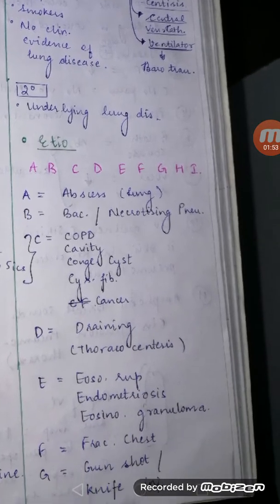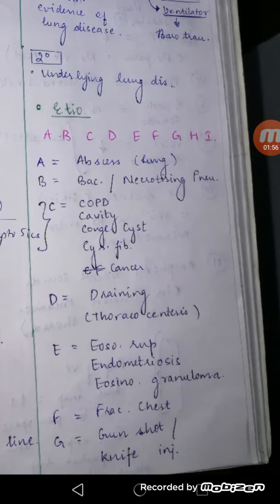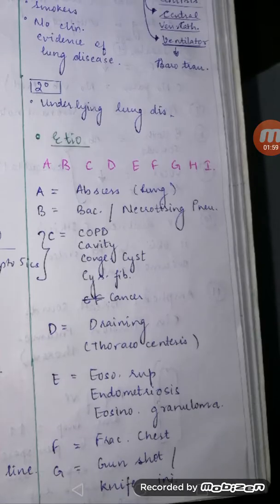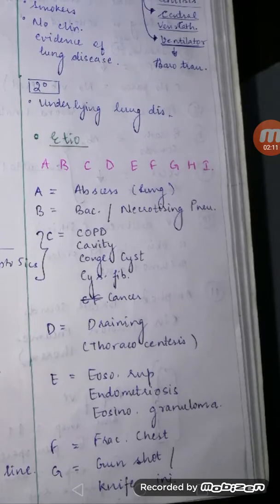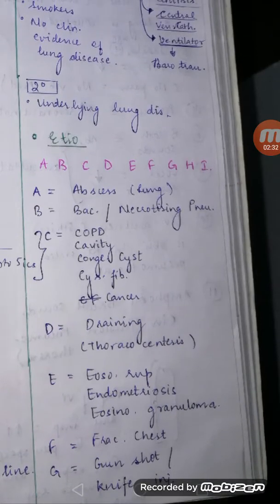The etiology of pneumothorax can be remembered using A to I. A is lung abscess. B is bacterial pneumonia or necrotizing pneumonia. With C there are five things: COPD, cystic fibrosis, congenital cyst, any cavitary lesion, and cancers such as mesothelioma — all can lead to development of pneumothorax.